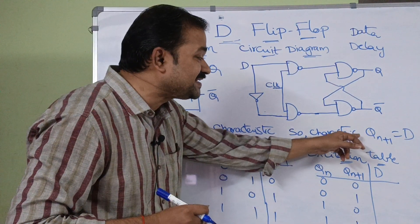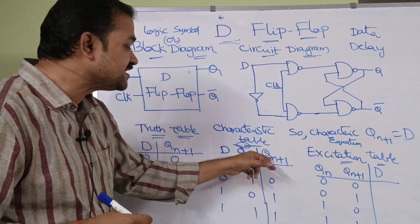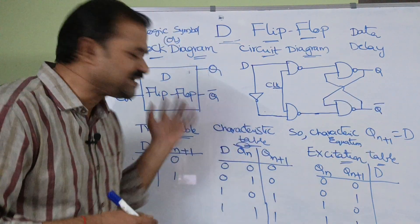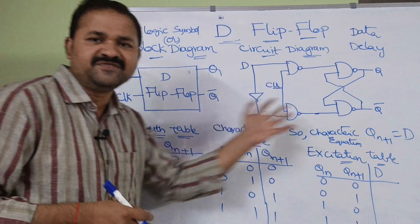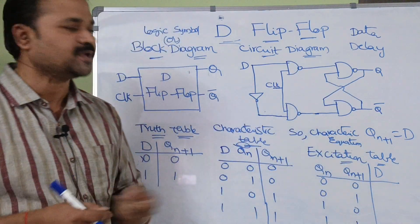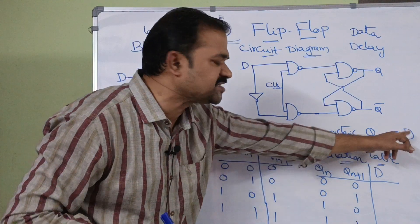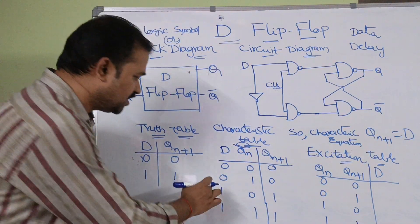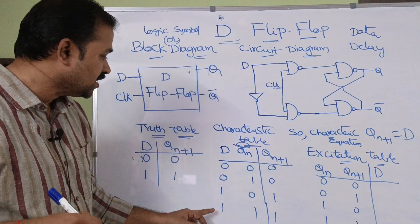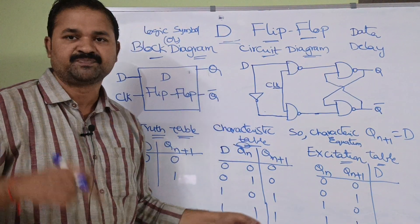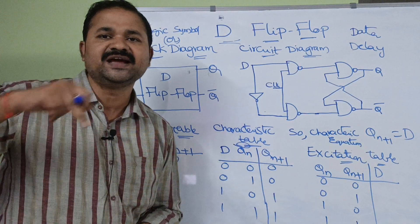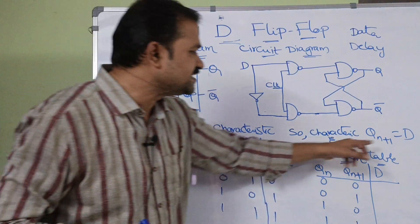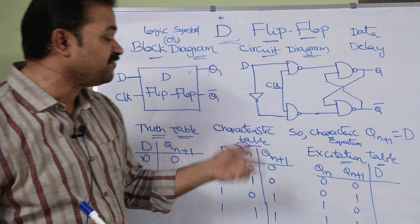Now let us see the characteristic equation. Q(N+1) is equal to D — directly, if the input is D then we get D as the output. We can also verify by simplification: the minterms give D·Q(N)bar + D·Q(N), and factoring out D gives Q(N) + Q(N)bar, which equals 1, so Q(N+1) = D. This is the characteristic equation of the D flip-flop.